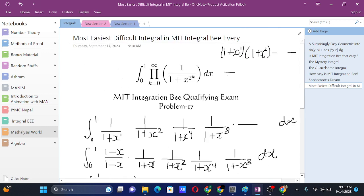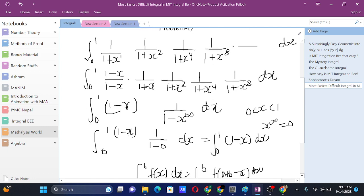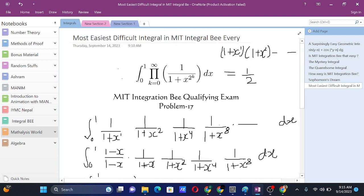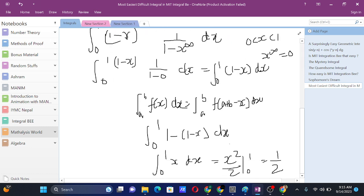One by two is the answer. Note that this long infinite product series was just (1 minus x), and from here we could have also done it, but I further simplified it. Yeah, this became the most easiest integral ever, because integral from 0 to 1 of x dx is the first integral that we know.